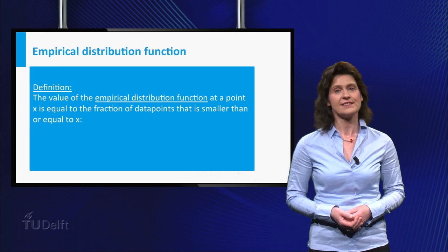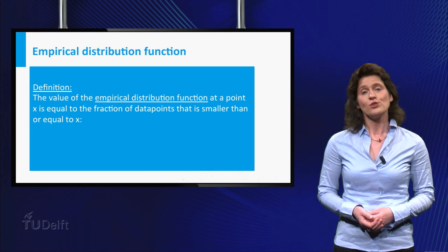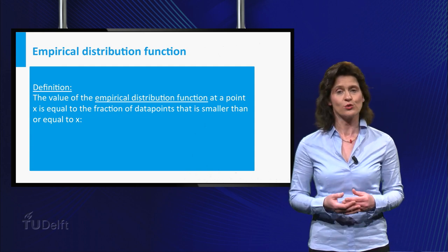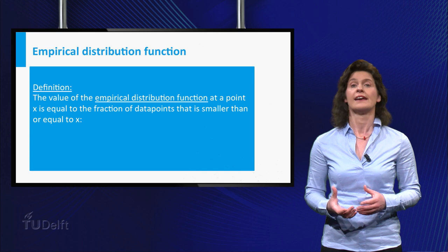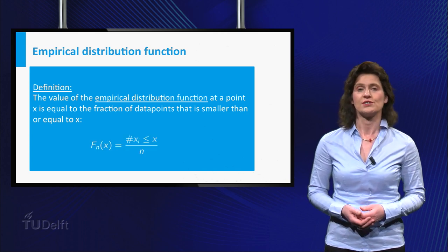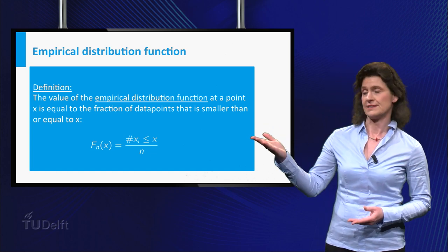Finally, let's introduce the empirical distribution function. The value of the empirical distribution function at a point x is equal to the fraction of data points that is smaller than or equal to x. The empirical distribution function is denoted by f sub n, so the formula is this.